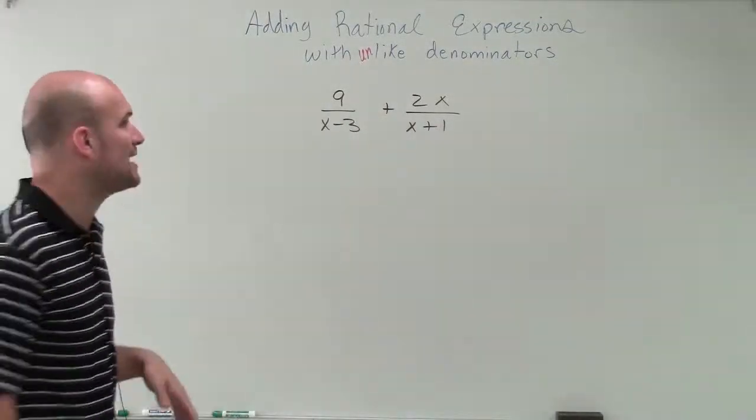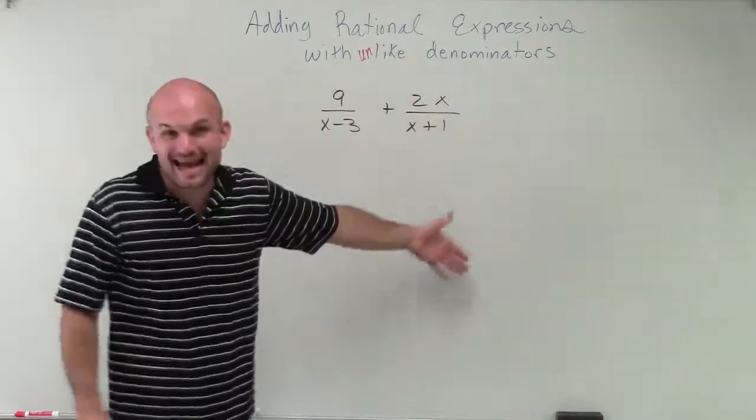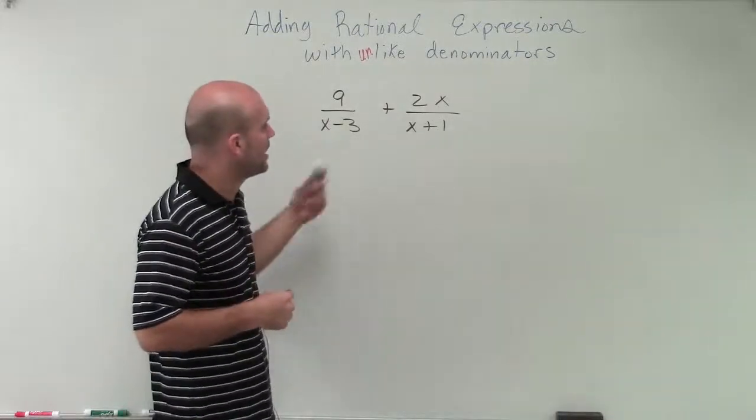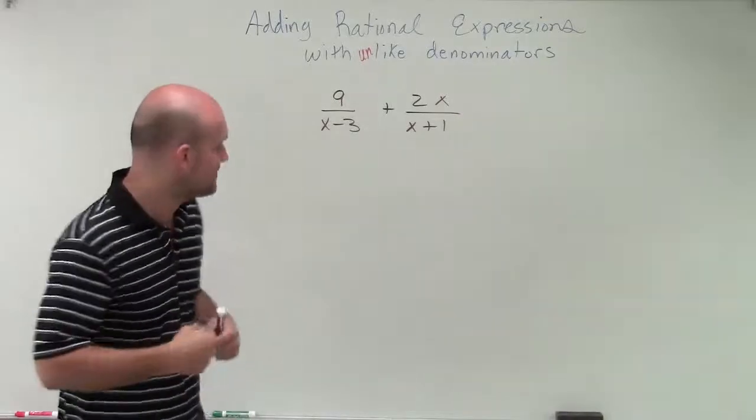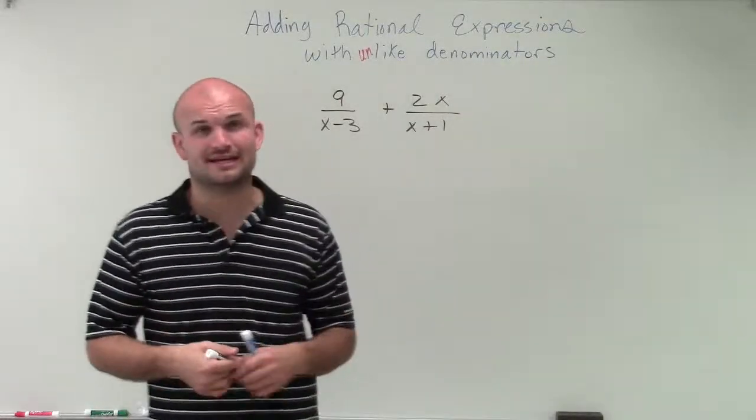In this case, we see we have two binomials. And the only thing that the binomials share is an x, right? So we know we can keep our LCM containing x. We don't need to go to x squared or x cubed or anything like that. But we see my binomials really have nothing to do, aren't really in common with each other.